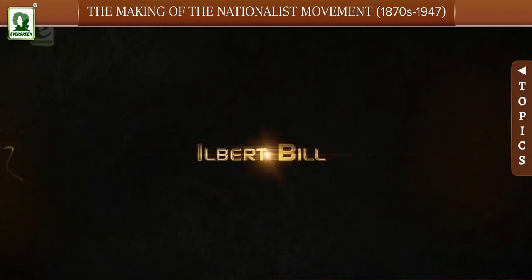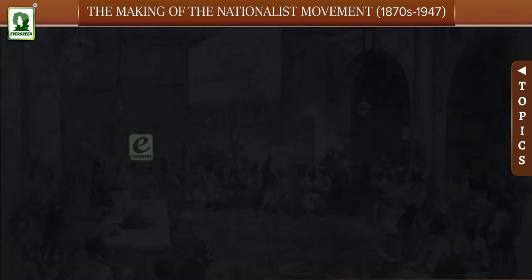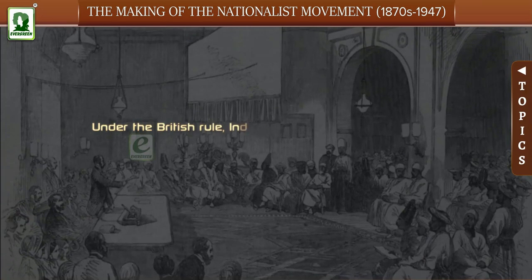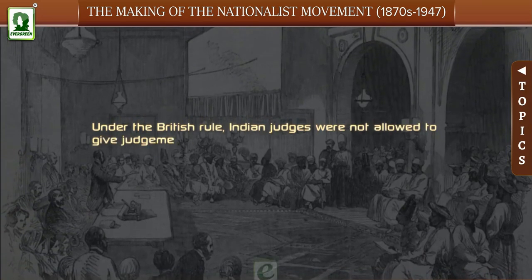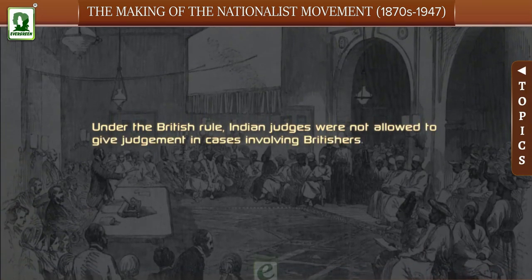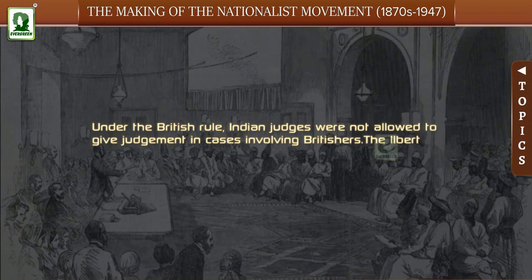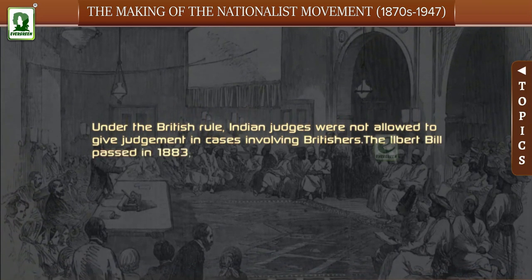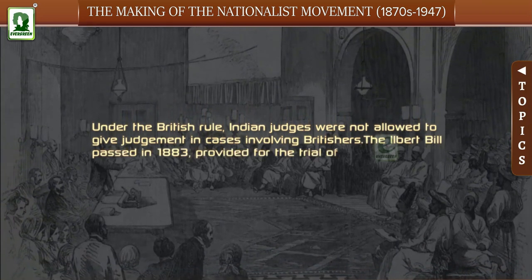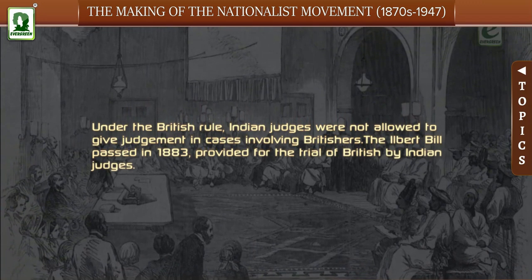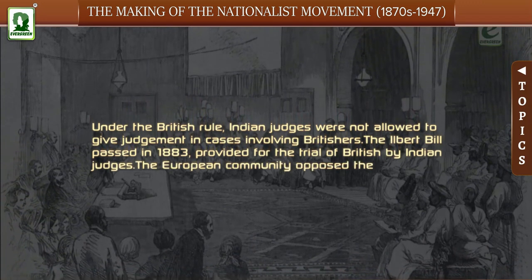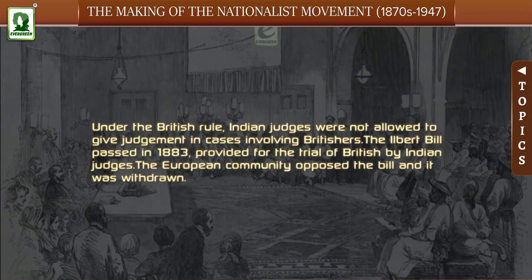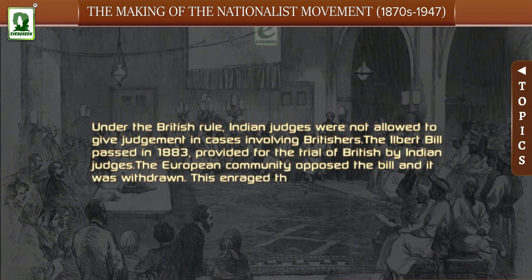The Elbert Bill: Under the British rule, Indian judges were not allowed to give judgment in cases involving Britishers. The Elbert Bill passed in 1883 provided for the trial of British by Indian judges. However, the European community opposed the bill and it was withdrawn, which enraged the Indians.